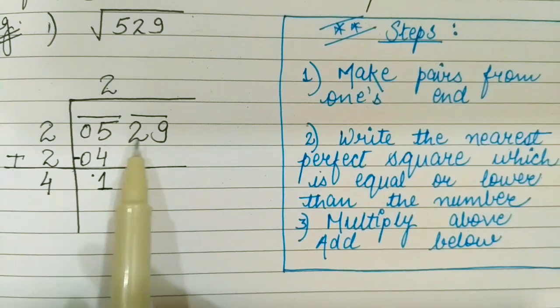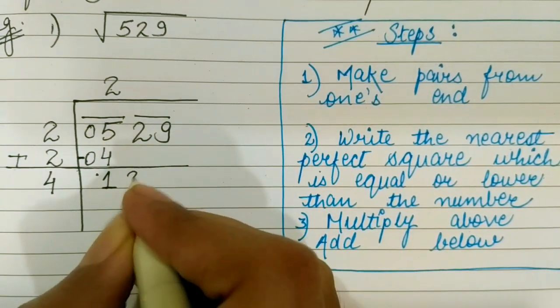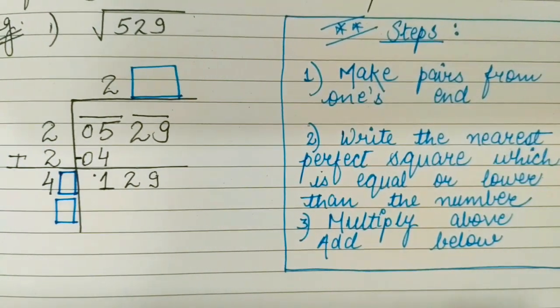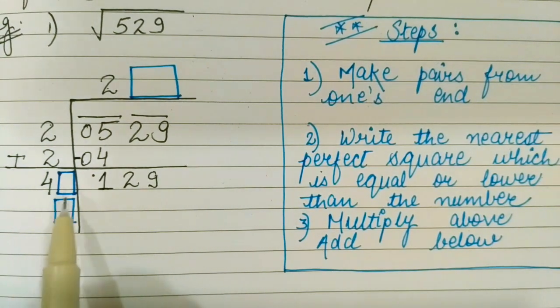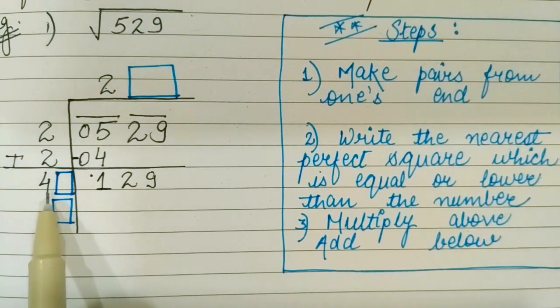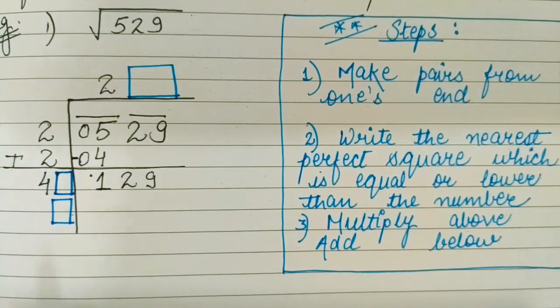Now copy the next pair. Next pair here is 29. Now you can see I have made boxes. In these boxes the same number will be filled in. Find the number which when multiplied will give us 129.